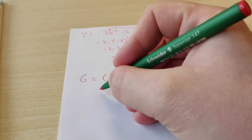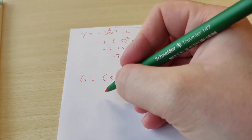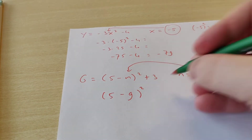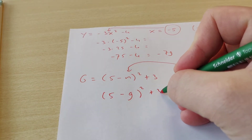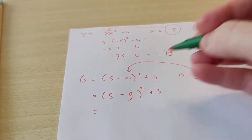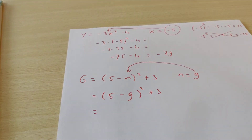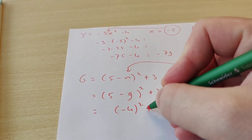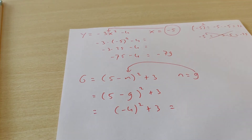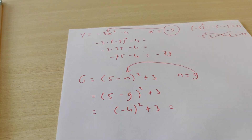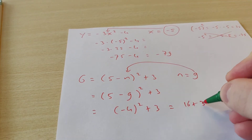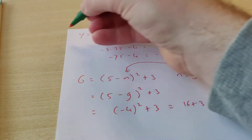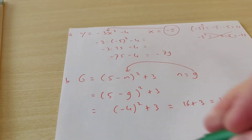So it says 5 minus 9 squared, and then plus 3. So 5 minus 9 is minus 4. Here we have minus 4 squared plus 3. Minus 4 squared is 16, and 16 plus 3 equals 19. So this was exercise A, this is exercise B.